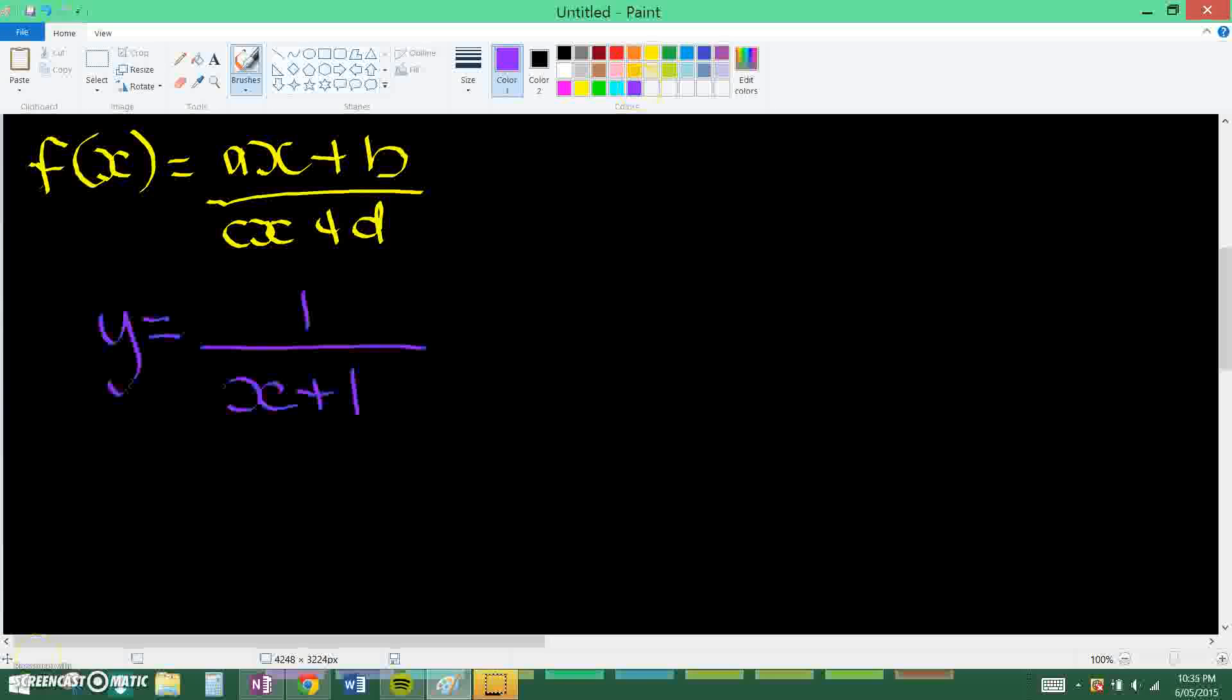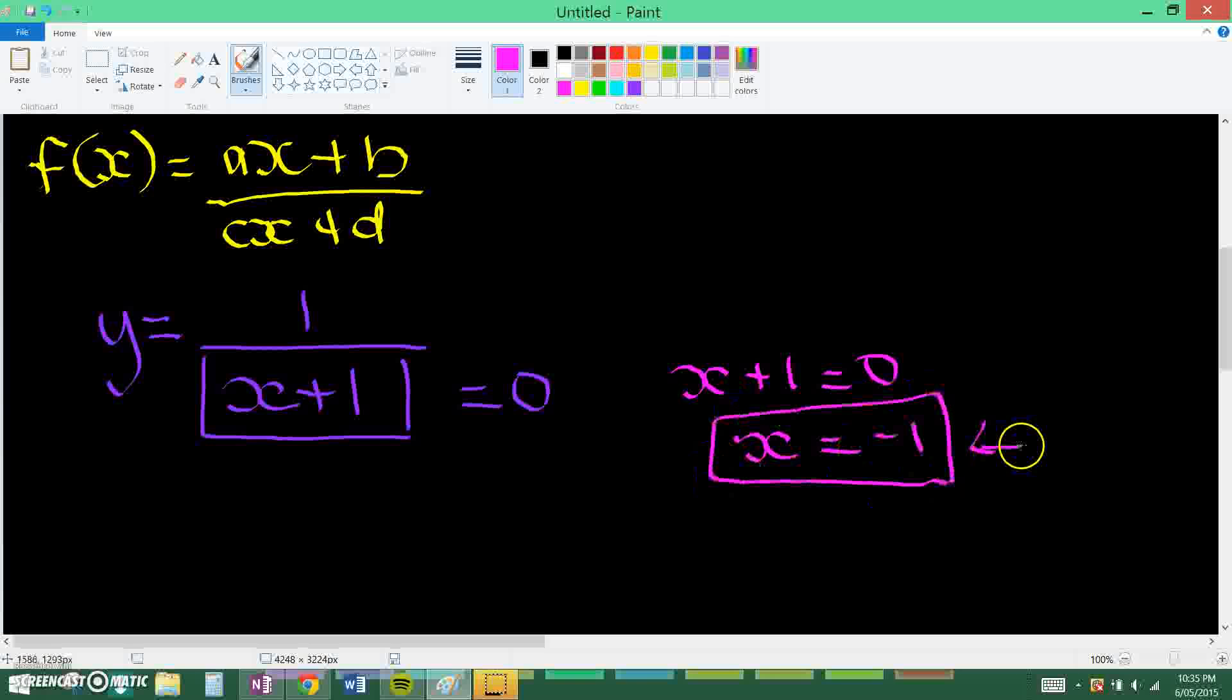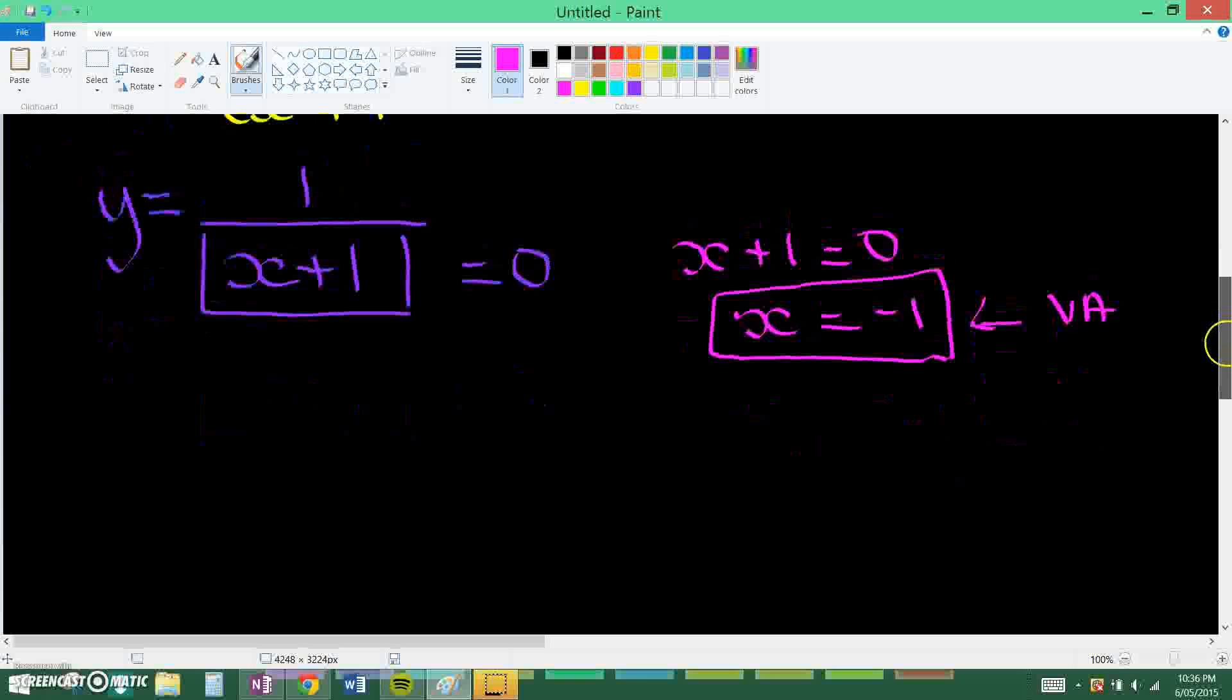Now to figure out the vertical asymptote what we need to do is you just make the denominator equal to zero. So all you'll need to do to solve that is x plus one equals zero, therefore x equals negative one, and that is your vertical asymptote. That's very easy.